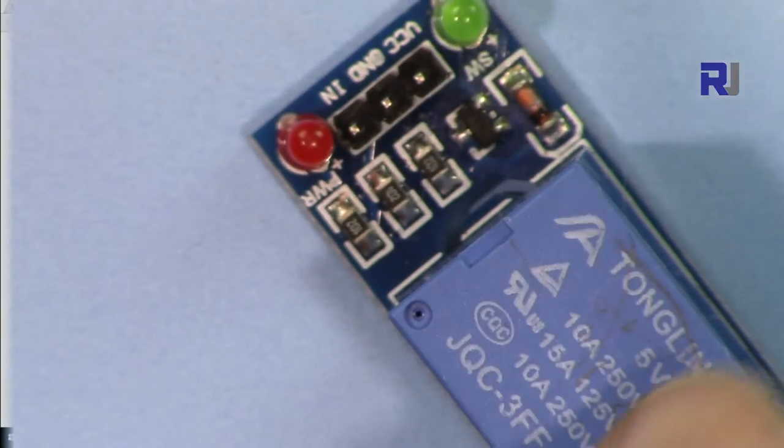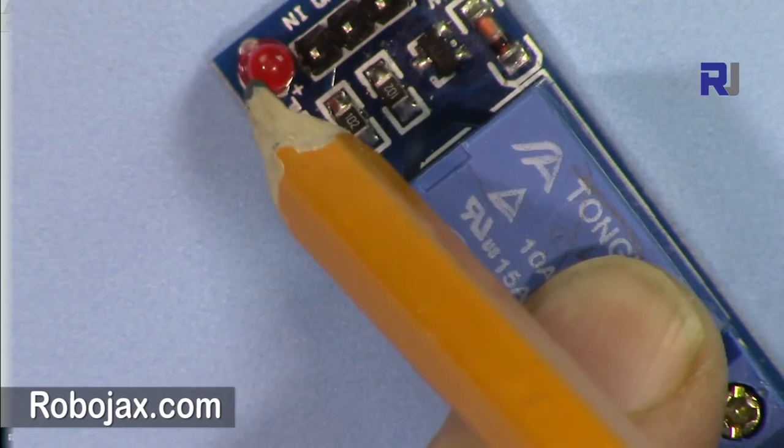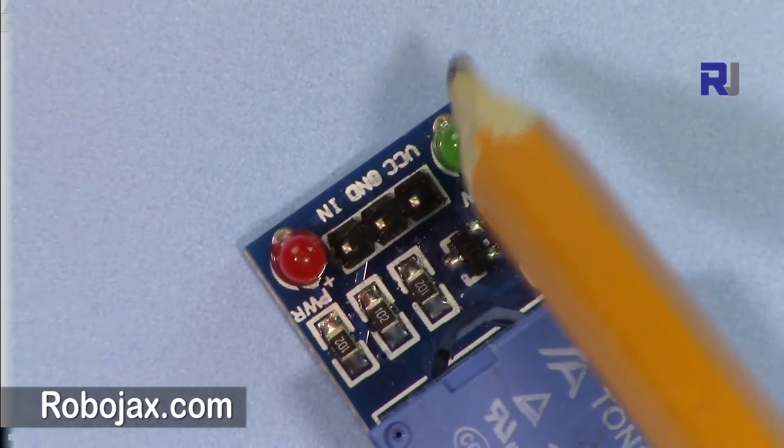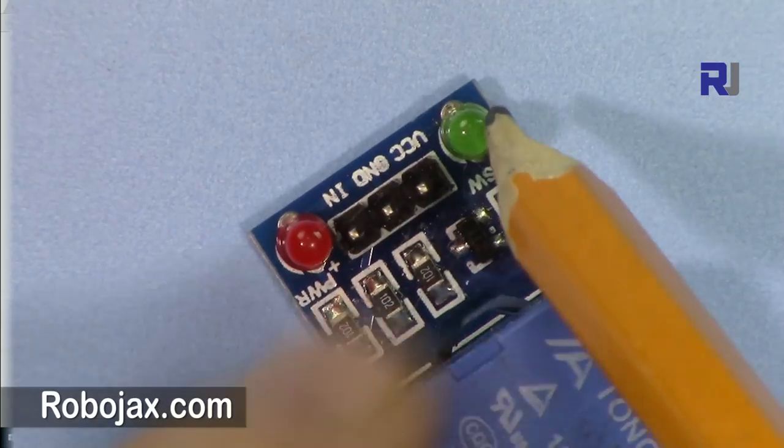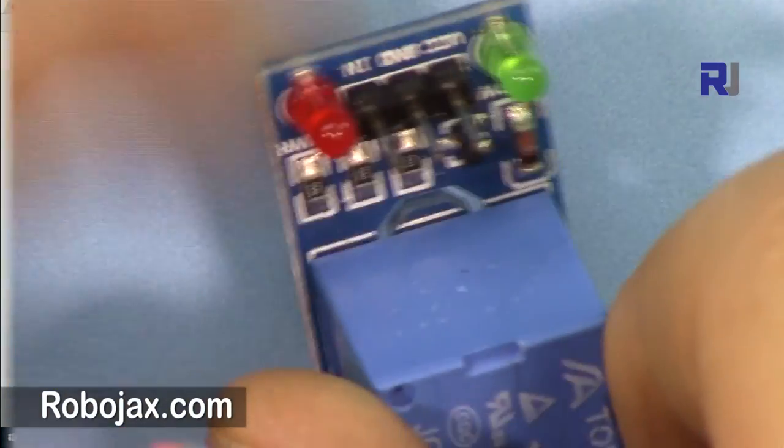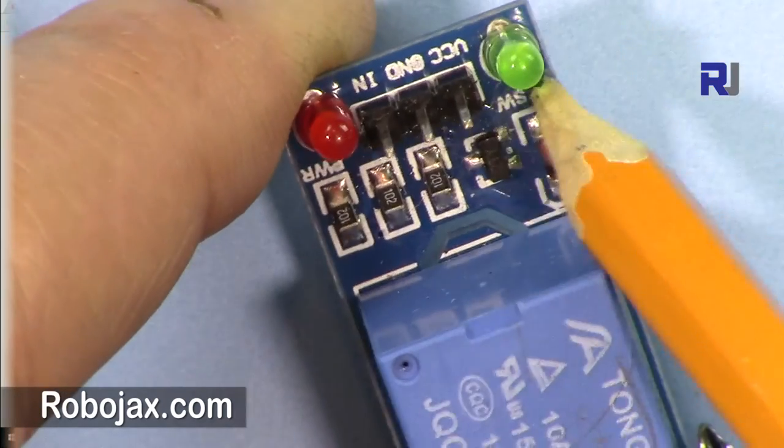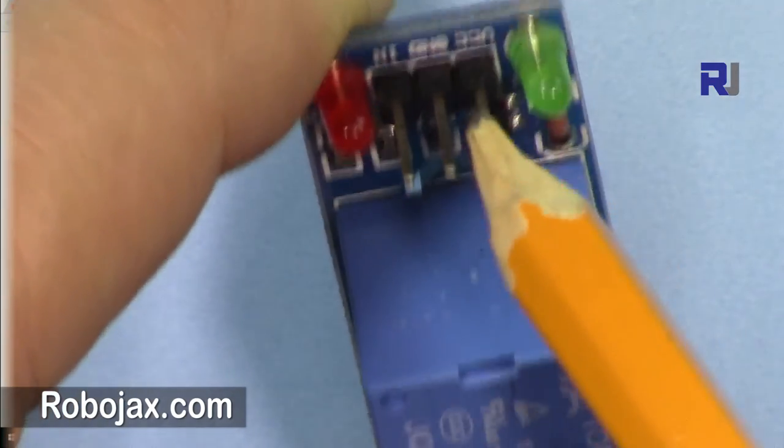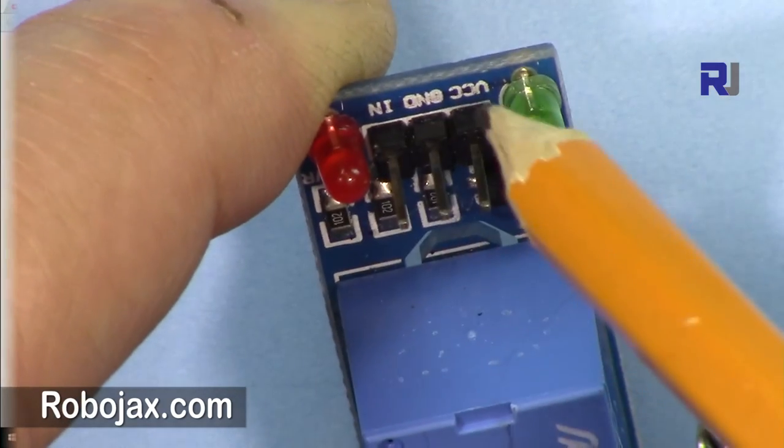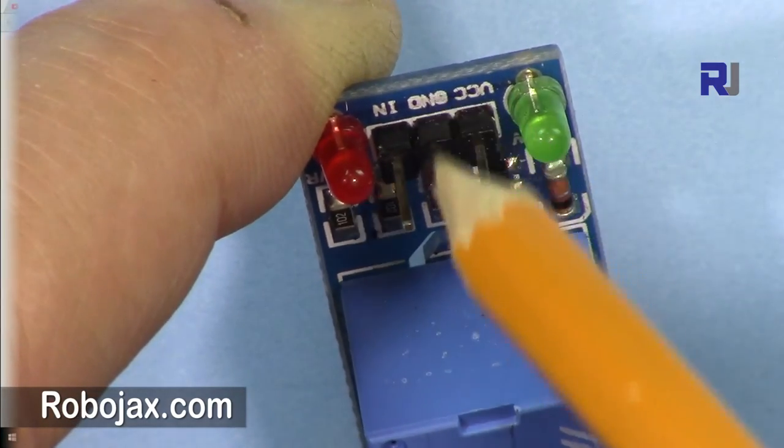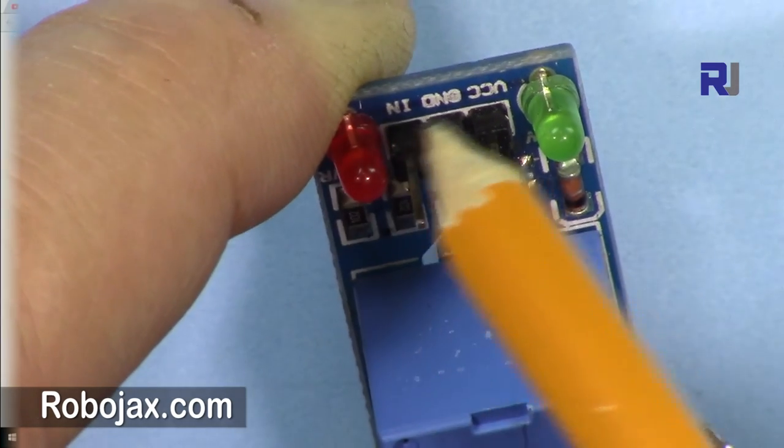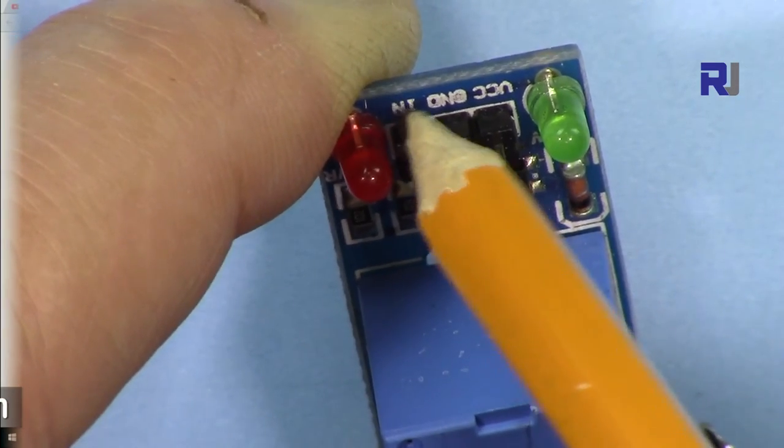We have two LEDs here. This red LED is for when it gets power, and then this will activate when it gets signal. So the three inputs or the three pins for the relay are VCC. This is VCC and this is ground. You will connect this to 5 volts and this is connected to the ground or negative wire.